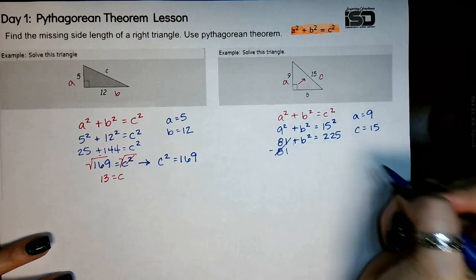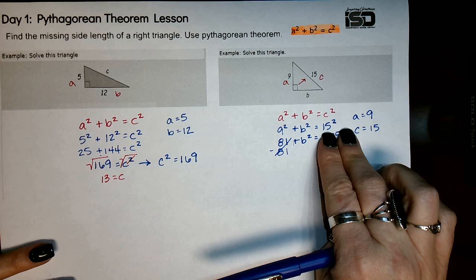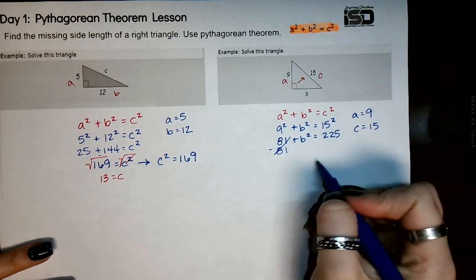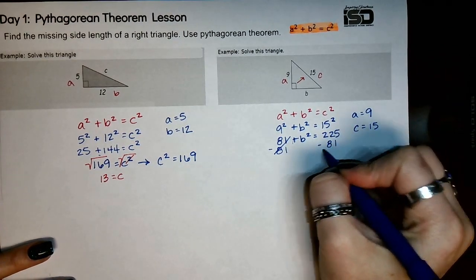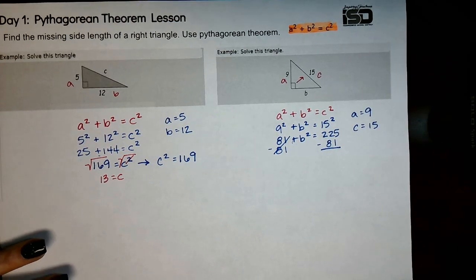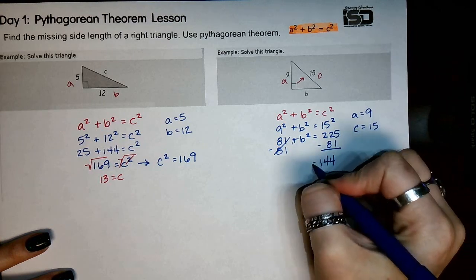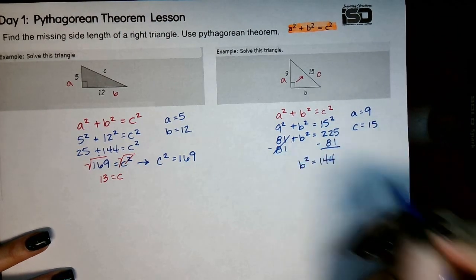Remember, if I move that 225 over, there wouldn't be anything left on this side, so I couldn't solve the equation. So instead, I'm going to move it over here. So I have 225 minus 81, that's going to be 144. Then we just bring down what we don't know.